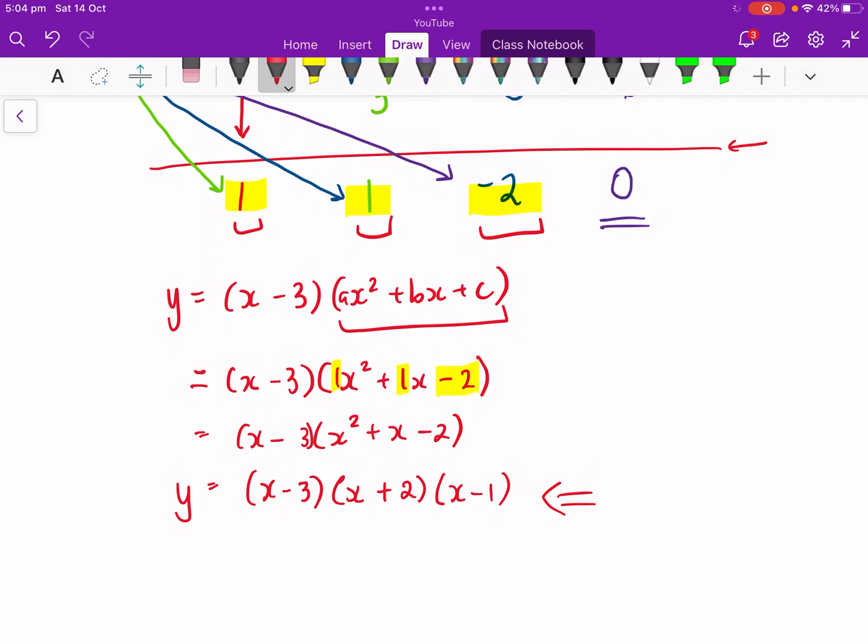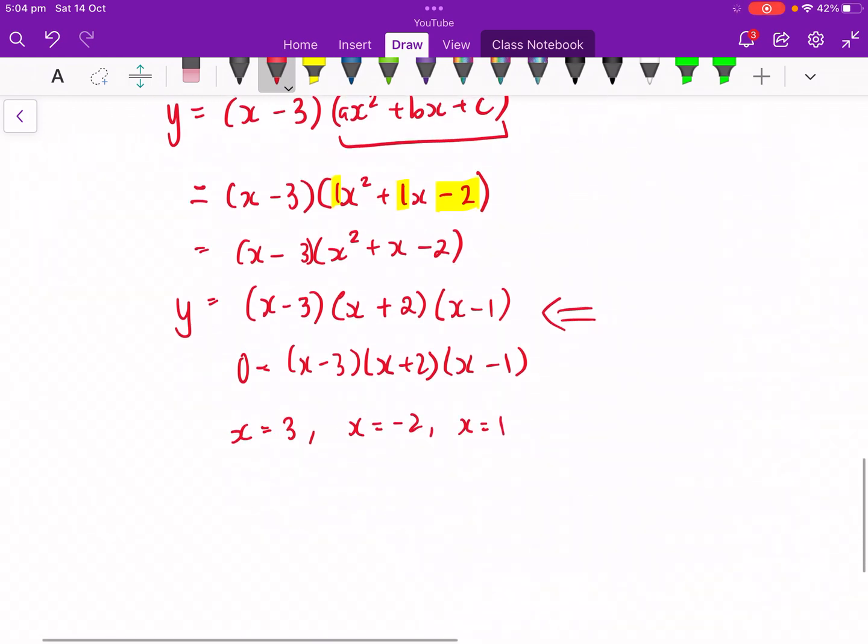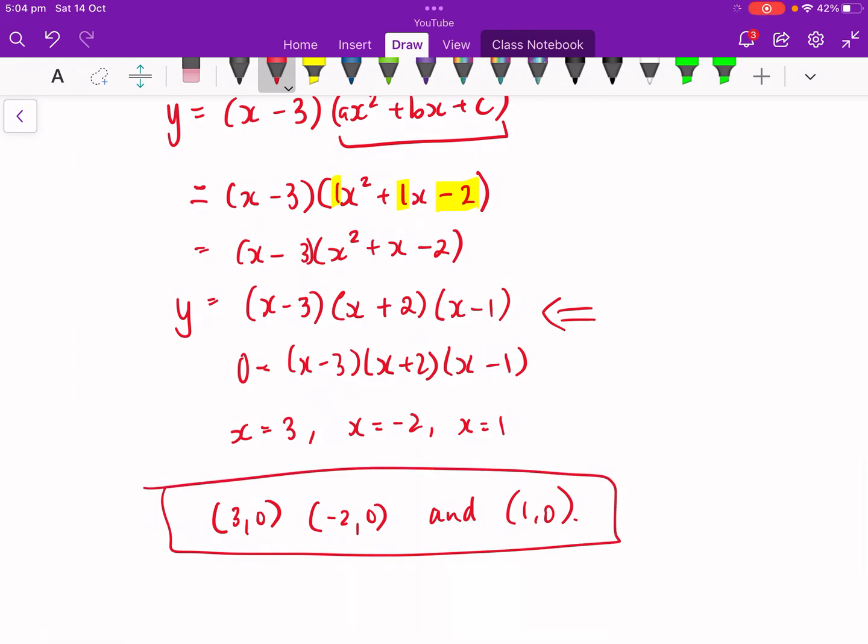Excellent. So now we can say, if we know their roots, y equals zero, because any x-intercept has a y-coordinate of zero, null factor law, we're going to apply it now. Now, that means x equals 3, x equals negative 2, x equals 1. That means our x-coordinates are (3, 0), (negative 2, 0), and (1, 0). So, there we go.